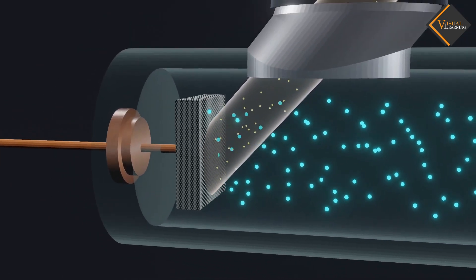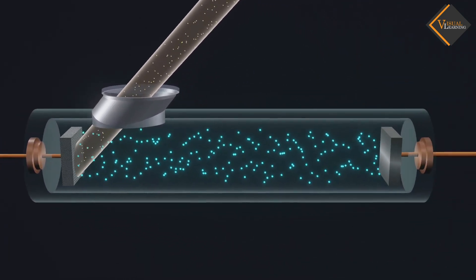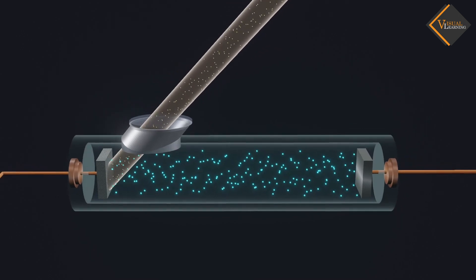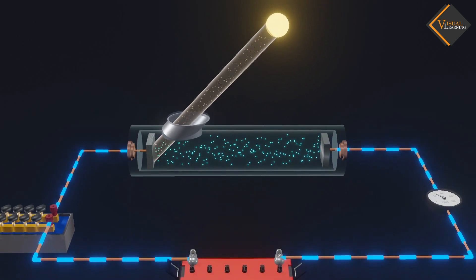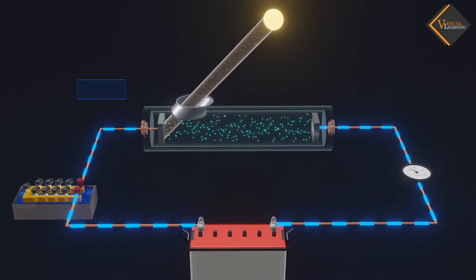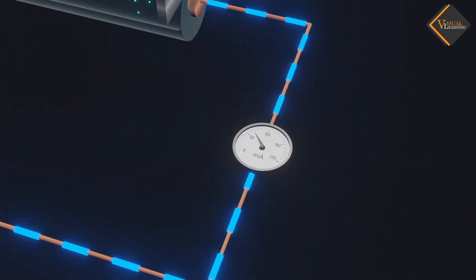These electrons accelerate towards the metal plate and start flowing in the outer circuit. This flow of electrons creates a circuit current which we call the photoelectric current, and can be measured using a microammeter.